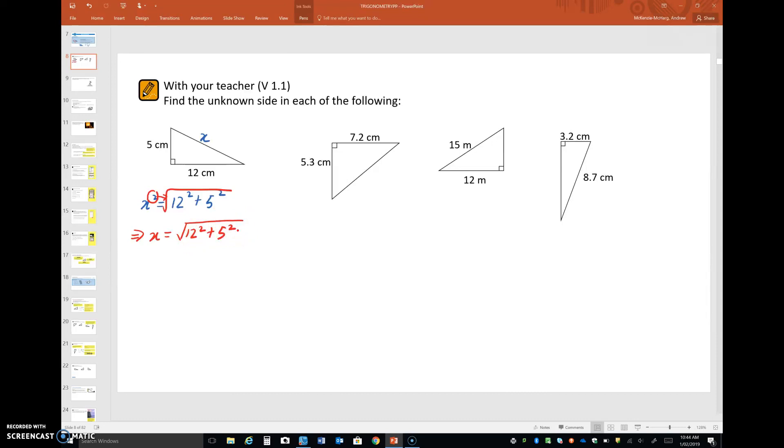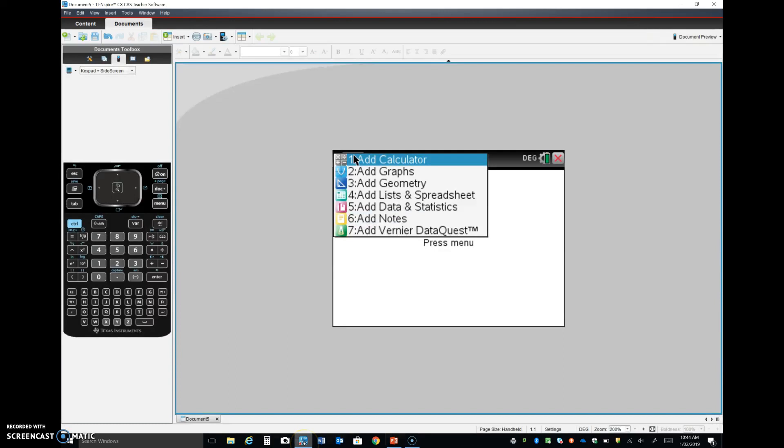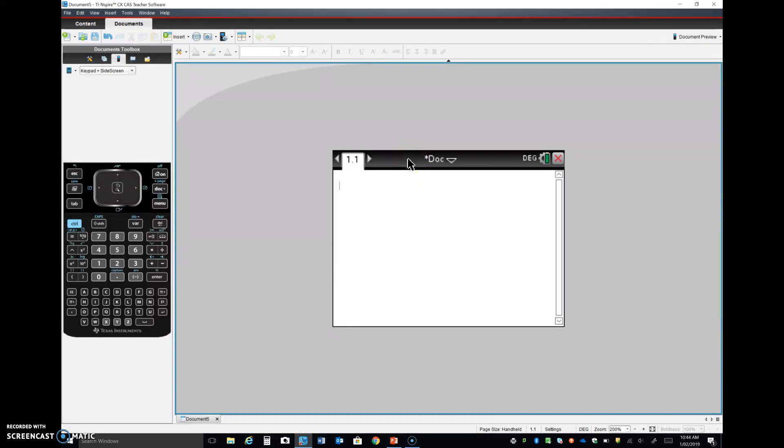Using the calculator, I find the best way, especially if you've got the TI Inspire or even on your scientific calculator, is to put it all in in one go. So I'm going to put this in: 12 squared plus 5 squared. That's all in there in one go and we should get 13 centimeters.